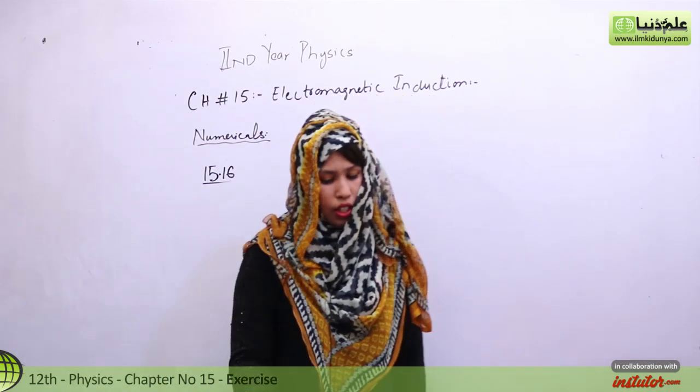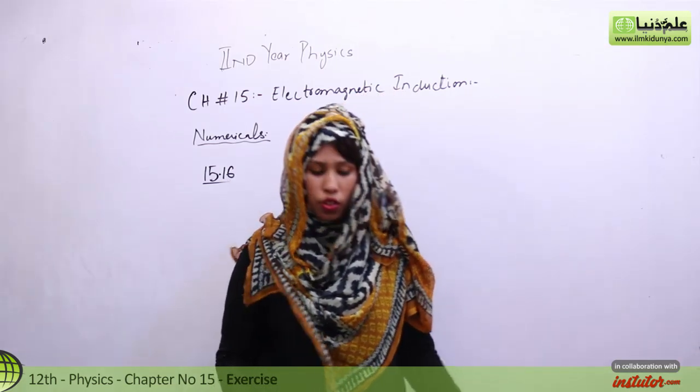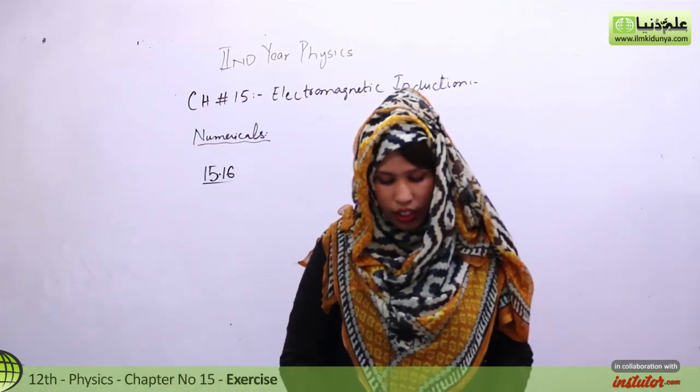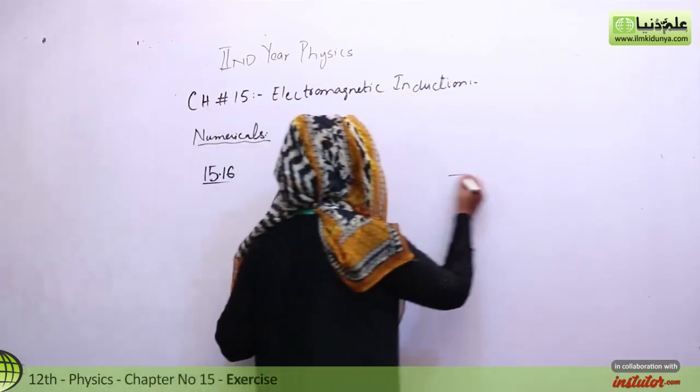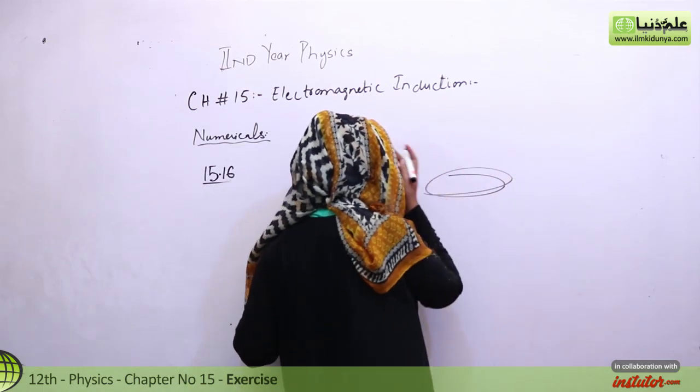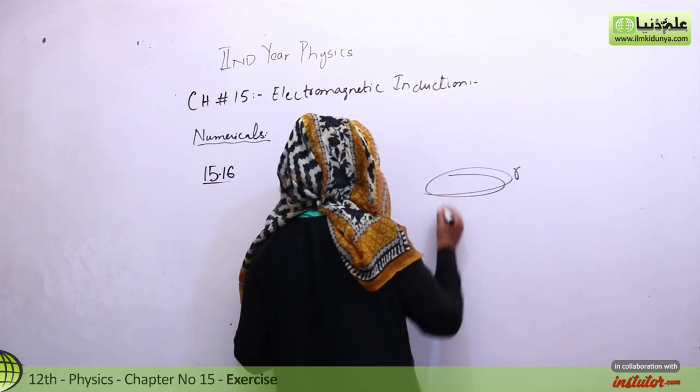A magnetic field is applied over the ring perpendicular to its plane. If the magnetic field increases from 0.2 tesla to 0.4 tesla in a time interval of 5 times 10 to the power minus 3 seconds, what is the current in the ring during this interval?